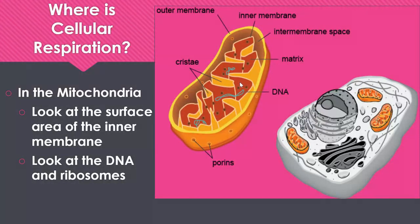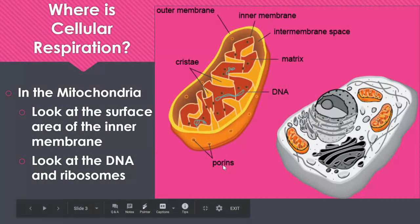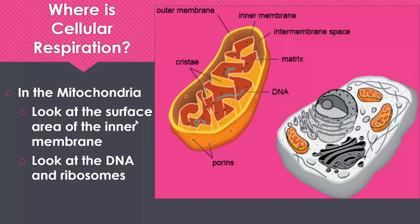That's similar to how the chloroplasts also had DNA and ribosomes in them. If it has its own DNA and its own ribosomes, then it can make its own proteins. Down here you also see porins — that's not super important for this class, but it does allow material to pass into the mitochondria through the outer membrane. So the inner membrane's cristae give it a high surface area, and the DNA and ribosomes tell us it has its own genetic information and can make its own proteins.